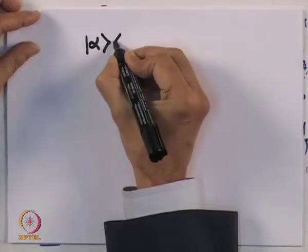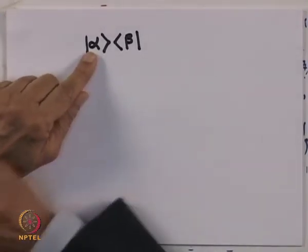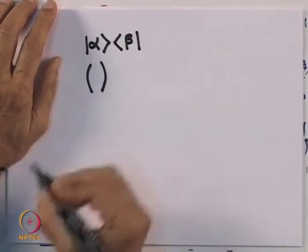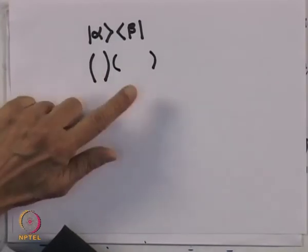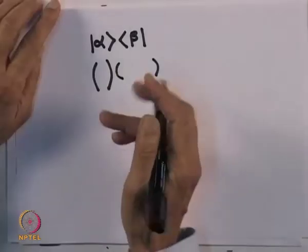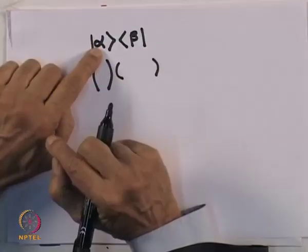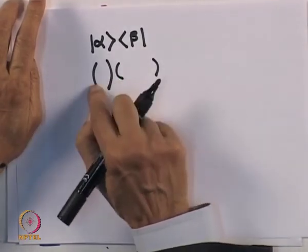Now, what happens to an operator? A general representation of an operator is a ket followed by a bra. If a ket is represented by a column vector and a bra by a row vector, this form is essentially what is known as a matrix direct product. If the column vector has two elements and the row vector has two elements, this product becomes a 2×2 matrix.